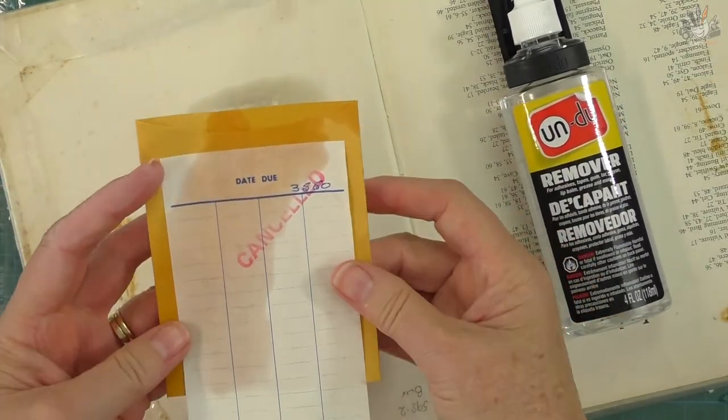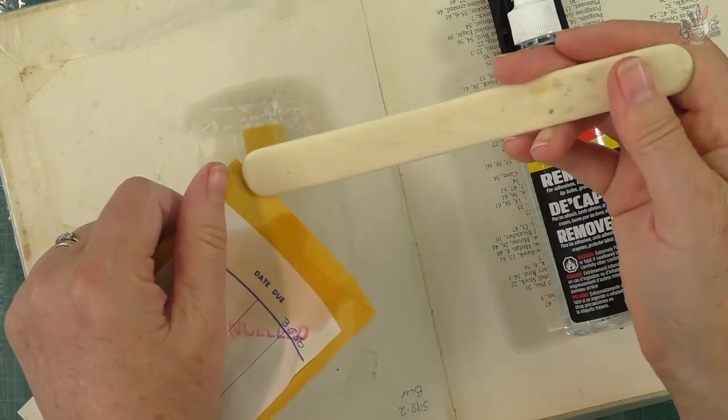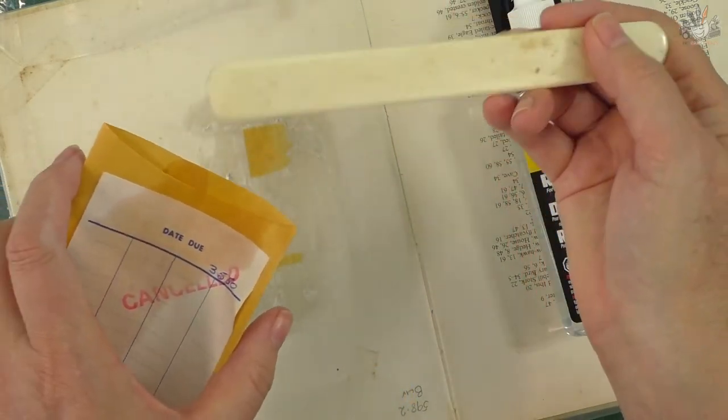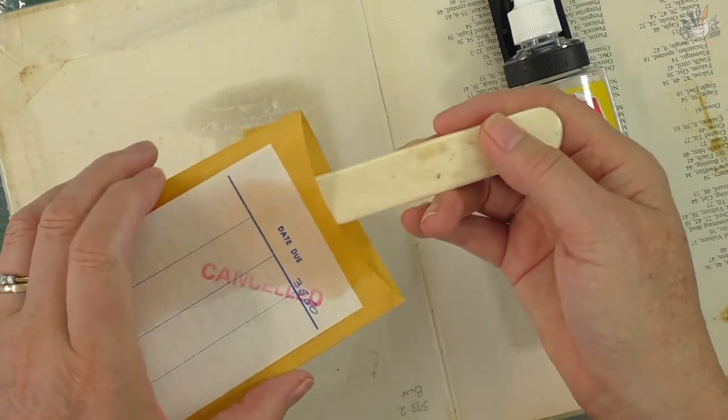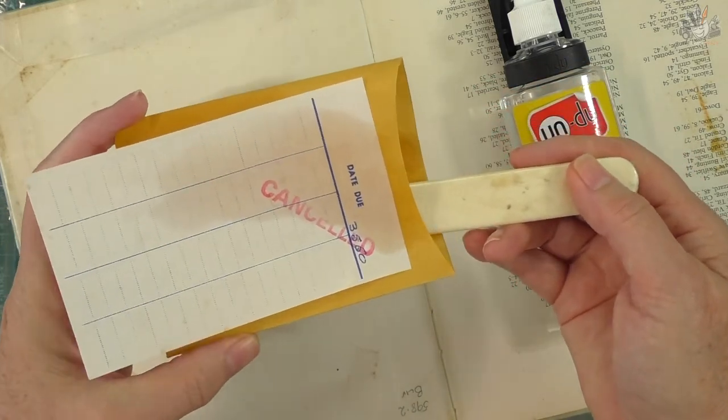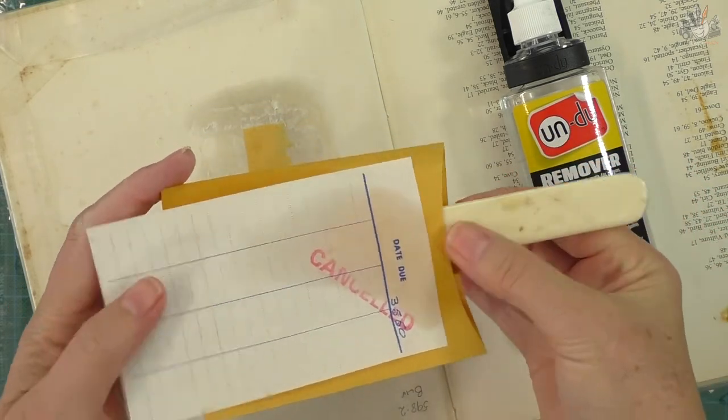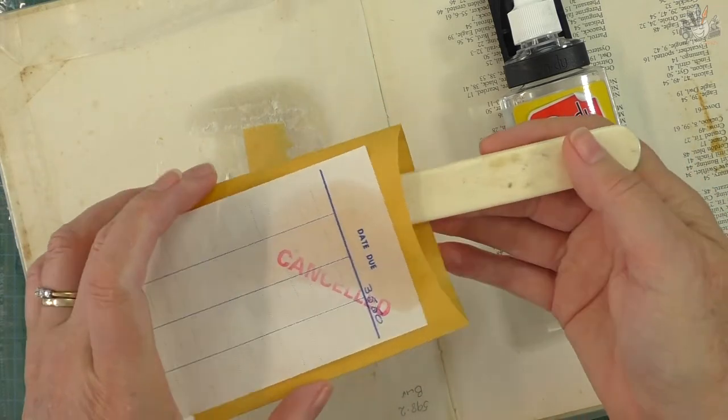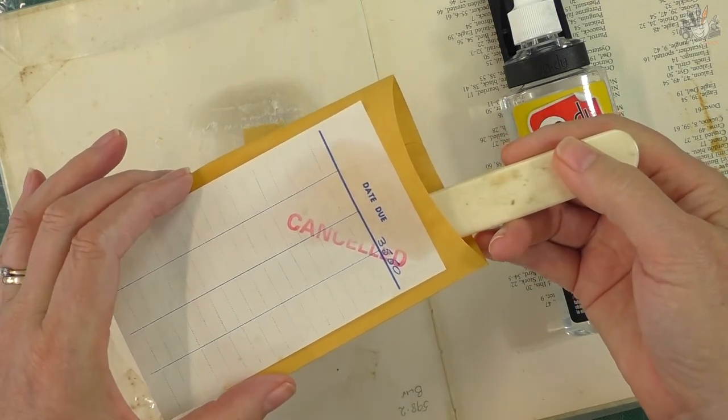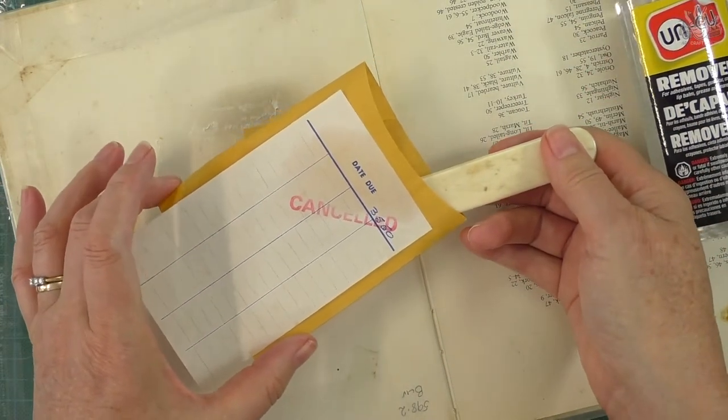And this will dry pretty quickly. I can just get my vintage bone folder. I use this for my leather work and I'll just air that out and you watch that dry. Dry pretty quickly, I'm just sort of helping it along a bit. So it evaporates really well and it does not damage the envelope or the paper. It's amazing.